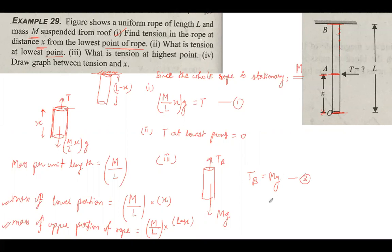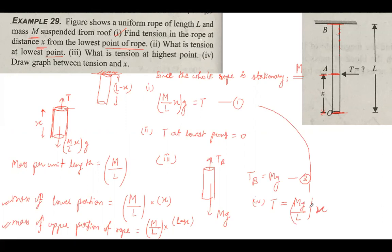The fourth part is to draw the graph between tension and x. From the first equation, tension T = (Mg/L)·x, which is a linear relation in x. So if tension is on the y-axis and x is on the x-axis, the graph will be a straight line passing through the origin.